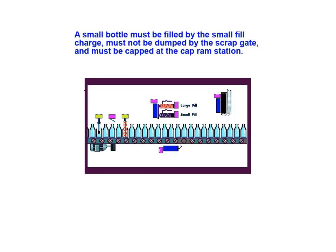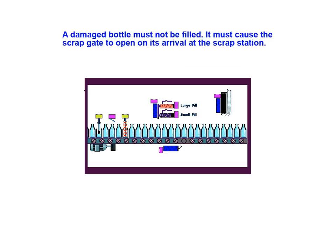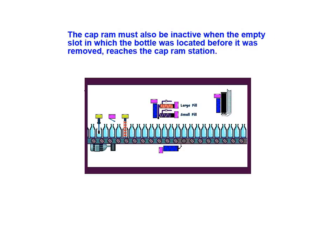A small bottle must be filled by the small fill charge, must not be dumped by the scrap gate, and must be capped by the cap ram station. A large bottle must be filled by the large fill charge, must also not be dumped by the scrap gate, and must also be capped at the cap ram station. A damaged bottle must not be filled; it must cause the scrap gate to open on its arrival at the scrap station. The cap ram must also be inactive when the empty slot in which the bottle was located before it was removed reaches the cap ram station.